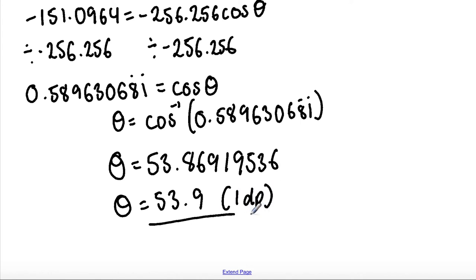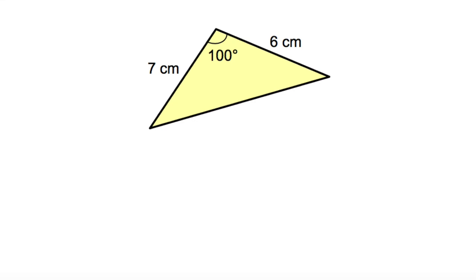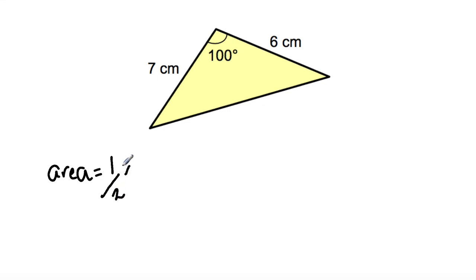And that's the final answer for question 2. Question 3 involves finding the area of a non-right-angle triangle. The lengths given are 7 centimetres and 6 centimetres, and the angle is 100 degrees. To find the area, we use the equation: area equals half times A times B times sine theta.